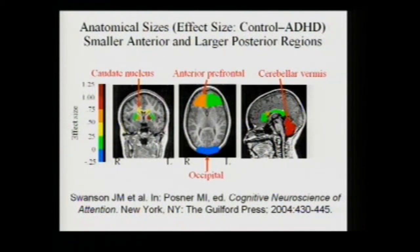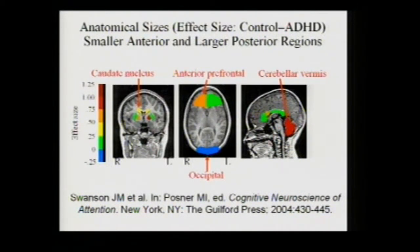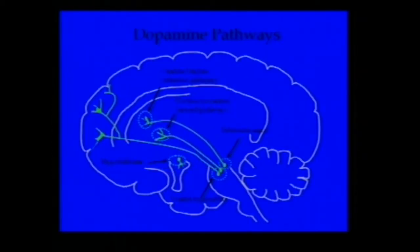There is a tendency for the posterior region of the brain — shown here as the occipital lobe — to be larger rather than smaller. So ADHD might be characterized as a front-back problem in neuroanatomy: smaller regions in the frontal cortex and larger in the back.